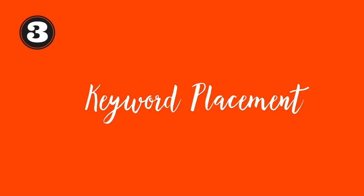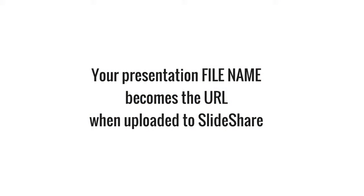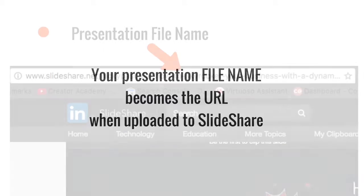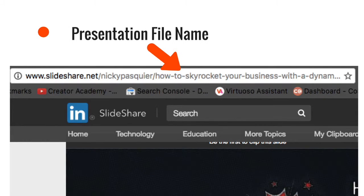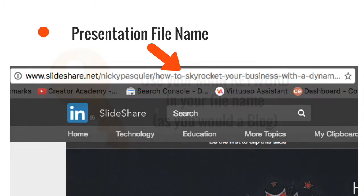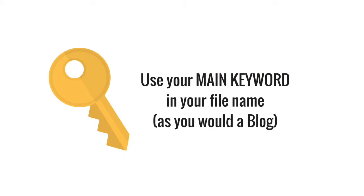So now you've got your keywords — where do you put them within a presentation? There are four strategic places. The most important point to remember is that the file name for your presentation will become the URL when you've uploaded the presentation onto SlideShare. So the file name becomes searchable in Google and within SlideShare itself. Ensure you use your main keyword or phrase within the file name.